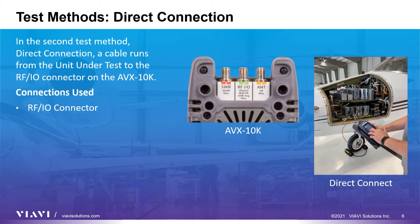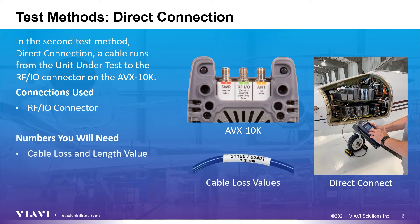The second test method is the direct connect type, RFIO, where the AVX10K is directly connected to the RF port on the transponder. The cable from the unit under test is attached to the RFIO connector port on the AVX10K. The loss value for the cable can be found on the cable label. If you don't have a cable loss value, the AVX10K will automatically enter a loss based on the length of the cable. Ideally, the measured loss value noted on the cable is the most accurate.